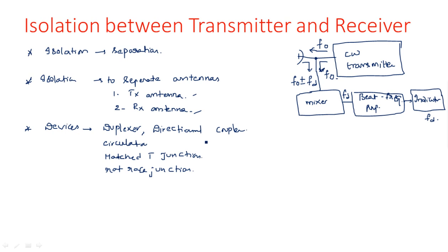These duplexer elements prevent the receiving signal from entering the transmitting section and vice versa. Another way is to use separate transmitting and receiving antennas. The isolation between transmitter and receiver can also be obtained with a single antenna using a hybrid junction — such as a magic T, rat race, or directional coupler.